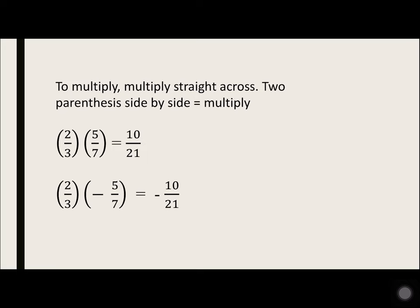What about 2 over 3 times negative 5 over 7? Think of that as a positive for the first fraction, times a negative second fraction equals a negative. And multiply the numbers: 2 times 5 and 3 times 7.